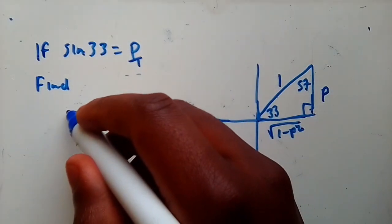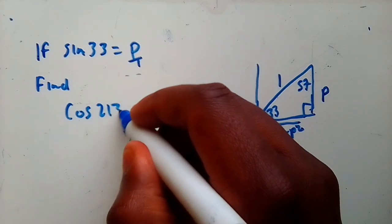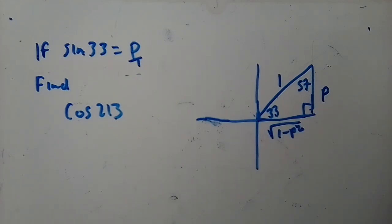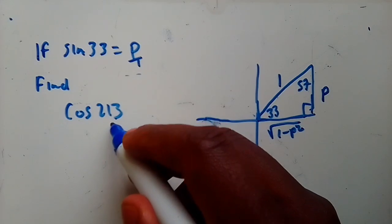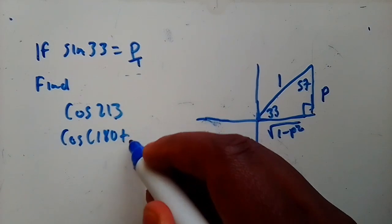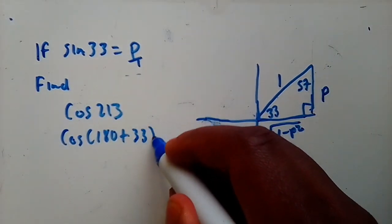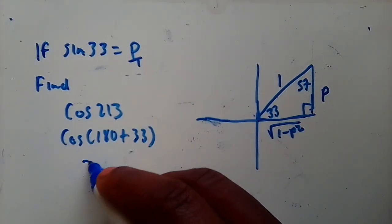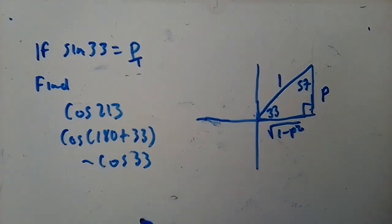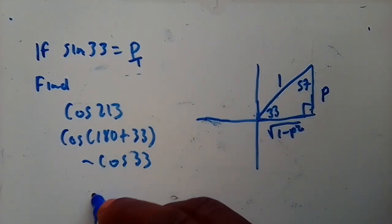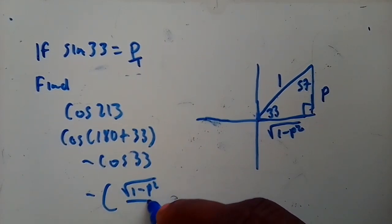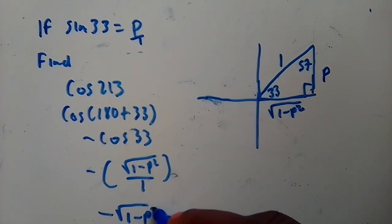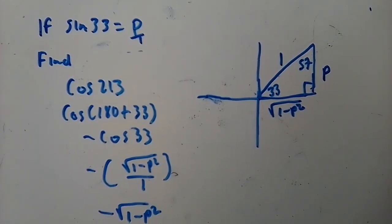Now let's say they ask for cos 213°. Since it's greater than 90°, we check which quadrant it's in — it's the third quadrant. The rule for the third quadrant is 180° + something, and 180° + 33° = 213°. So it reduces to cos 33°. Cos is negative in the third quadrant, so the answer is -cos 33° = -√(1 - p²).